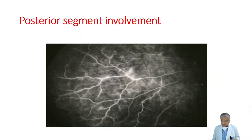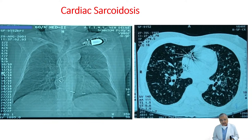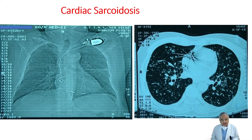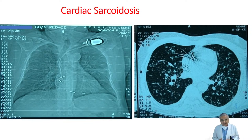Eye involvement is also important, including posterior segment involvement. Cardiac sarcoid is a very important issue which gets missed. This patient is a 60-year-old male who came with complete heart block, admitted in cardiology with a diagnosis of sclero-degenerative heart disease — sarcoidosis wasn't even considered. A pulmonary medicine consultation was sent because the chest X-ray showed reticular markings. The CT shows classical features suggesting sarcoid. Unless you have a high index of suspicion, you will tend to miss it.